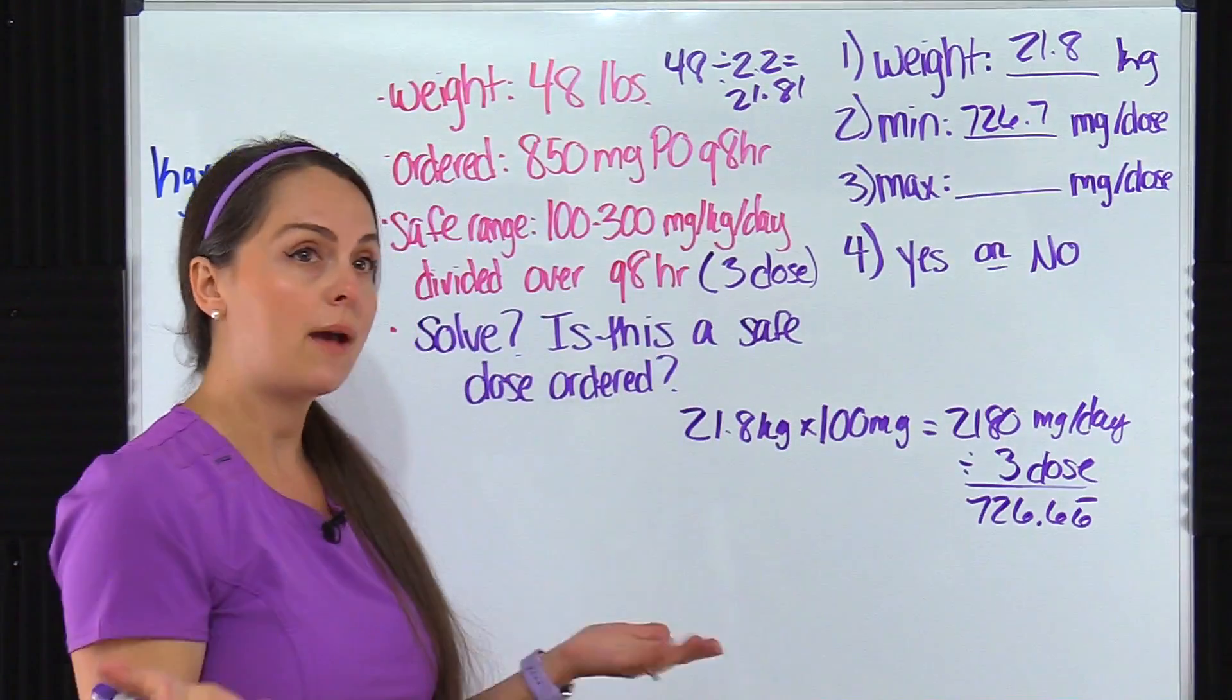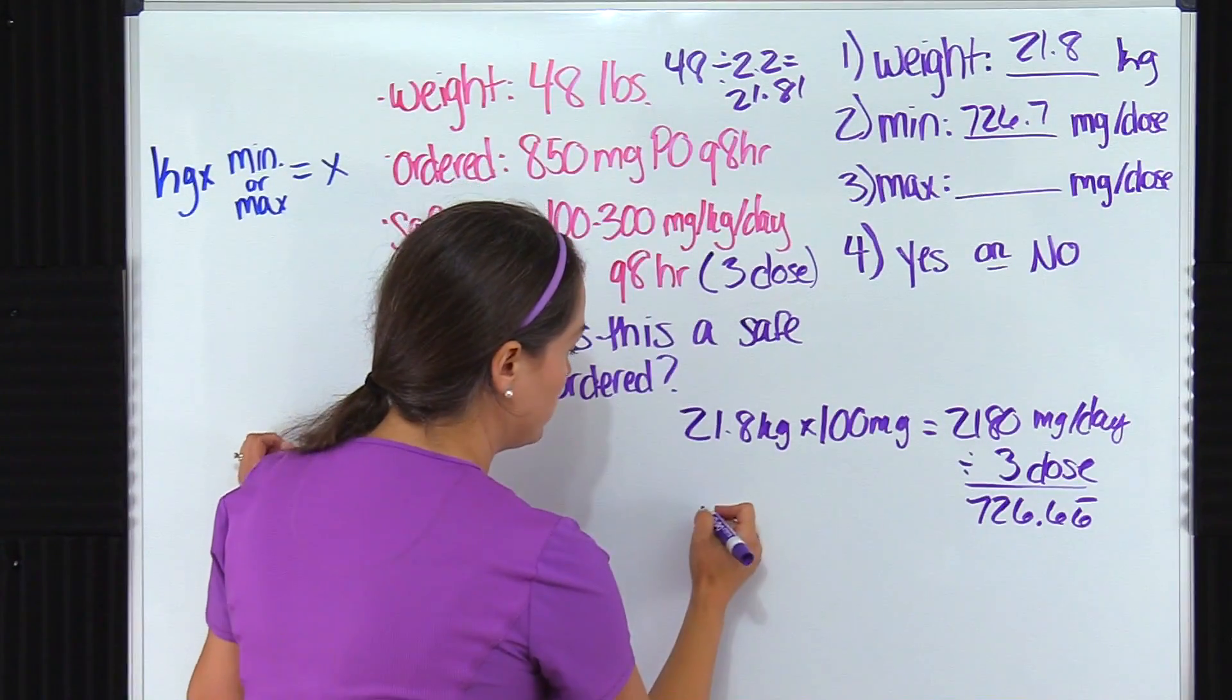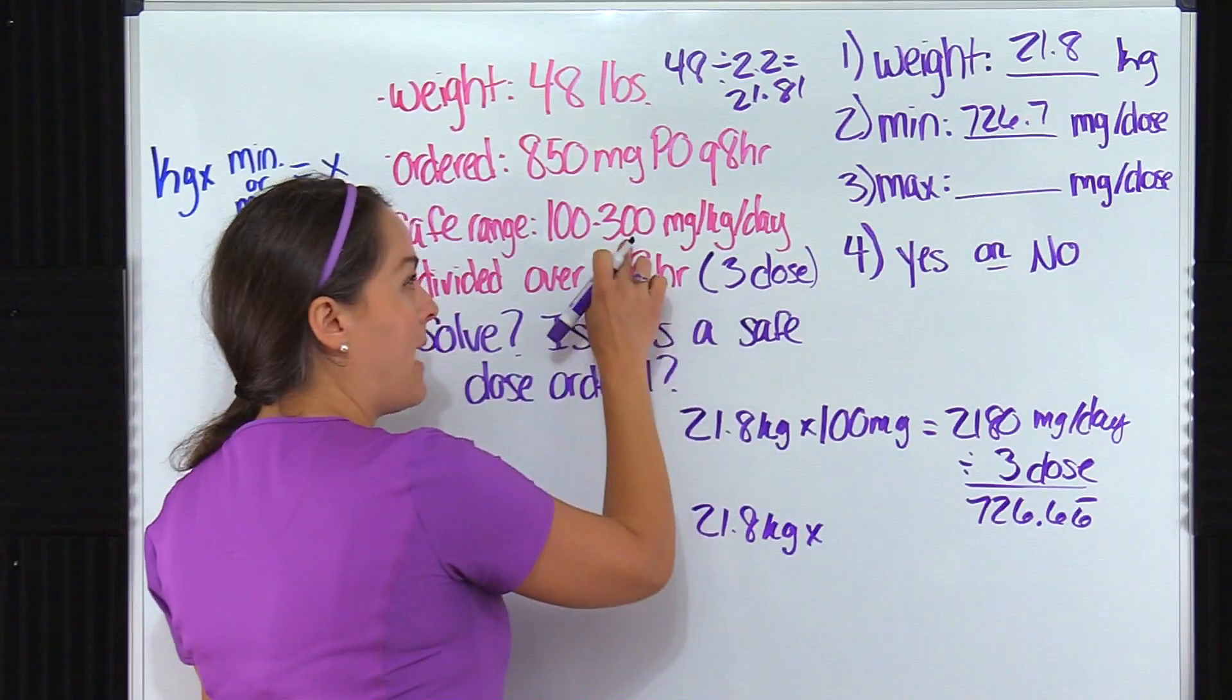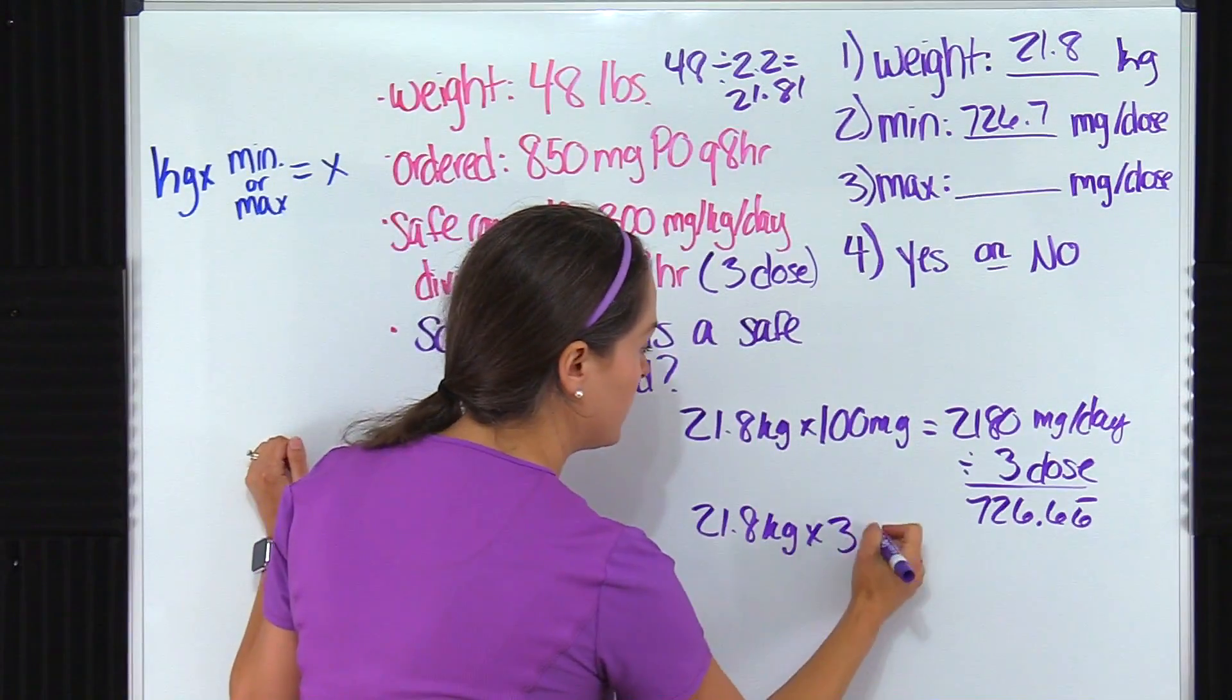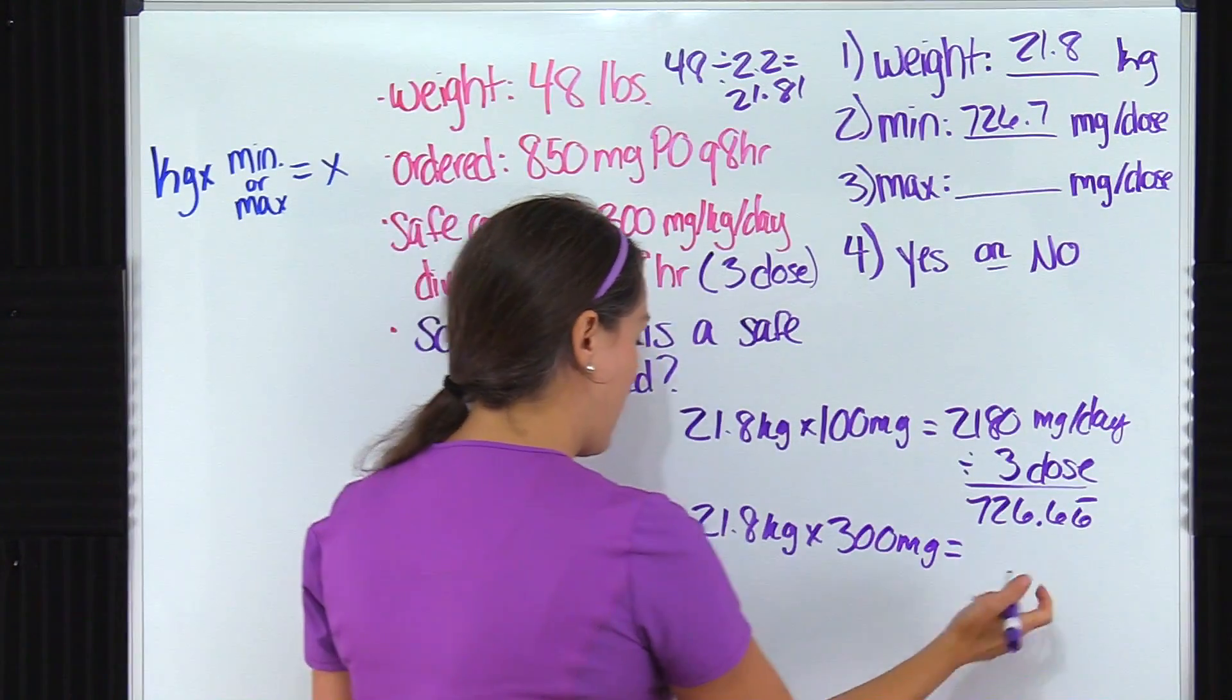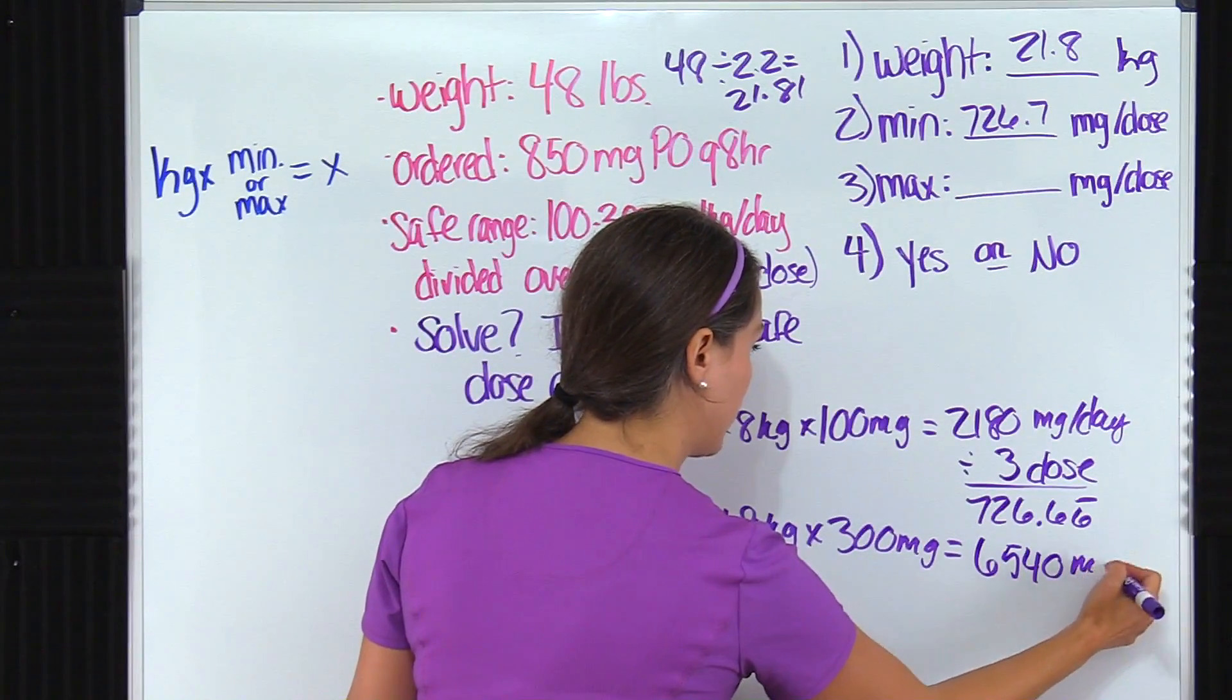Now let's figure out the max dose. Again, using the same formula here, we're going to do their weight in kilograms multiplied by the maximum dose, which was 300 milligrams. When we multiply that out, I get 6,540 milligrams per day.